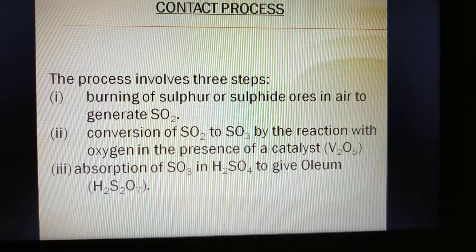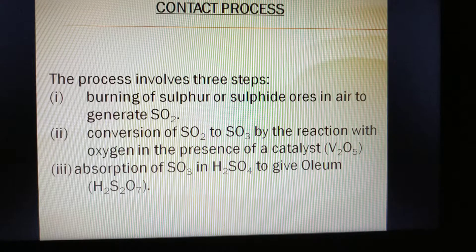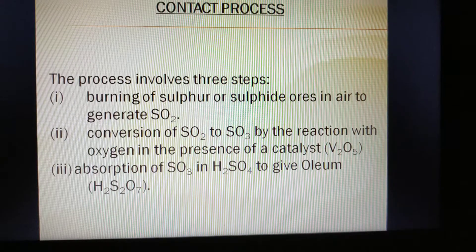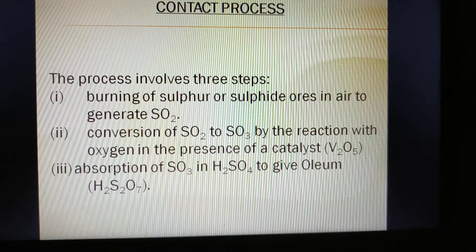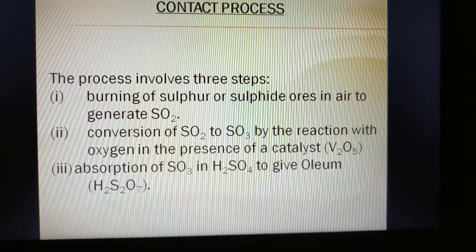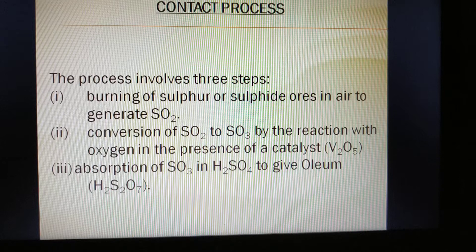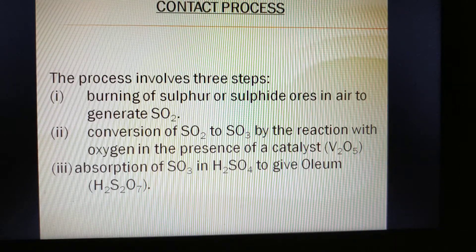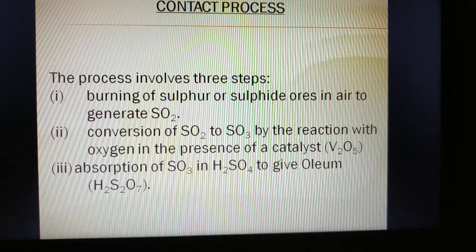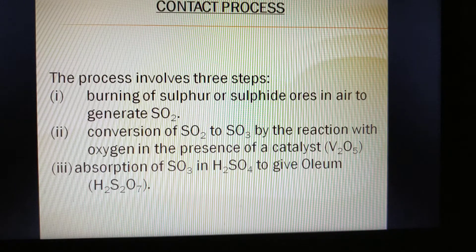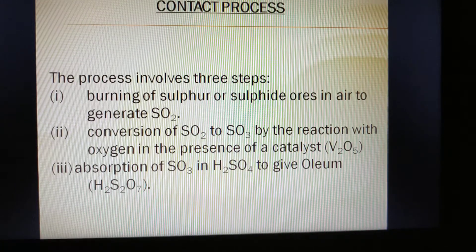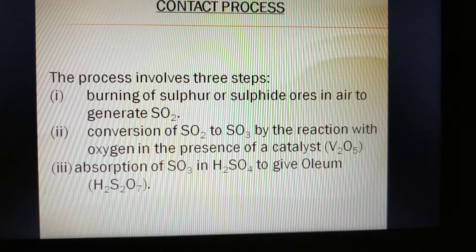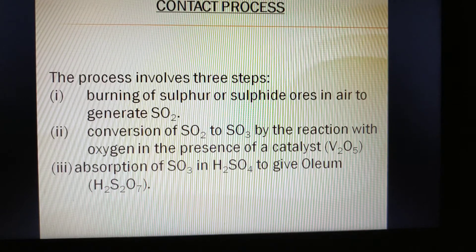The first step is the burning of sulfur or sulfide ores in air to generate SO2. In the second step, SO2 is converted into SO3 — sulfur trioxide — by a reaction. For this step, a catalyst is required: V2O5, and specific conditions apply.